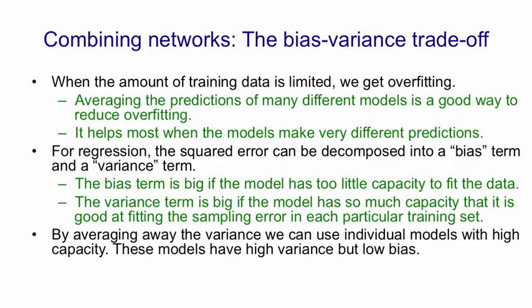If we average models together, what we're doing is we're averaging away the variance. That allows us to use individual models that have high capacity and therefore high variance. These high capacity models typically have low bias. So we can get the low bias without incurring the high variance by using averaging to get rid of the variance.